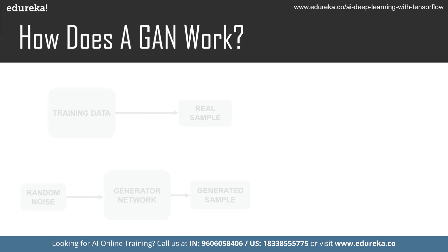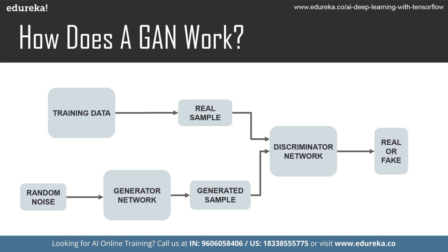To understand how GANs work, let's break it down. 'Generative' means the model follows an unsupervised learning approach. 'Adversarial' means the model is trained in an adversarial setting. 'Network' refers to the use of neural networks as the AI algorithms. The generator produces synthetic data samples, and the discriminator then decides whether each sample is real or generated, using a sigmoid function outputting values between 0 and 1.